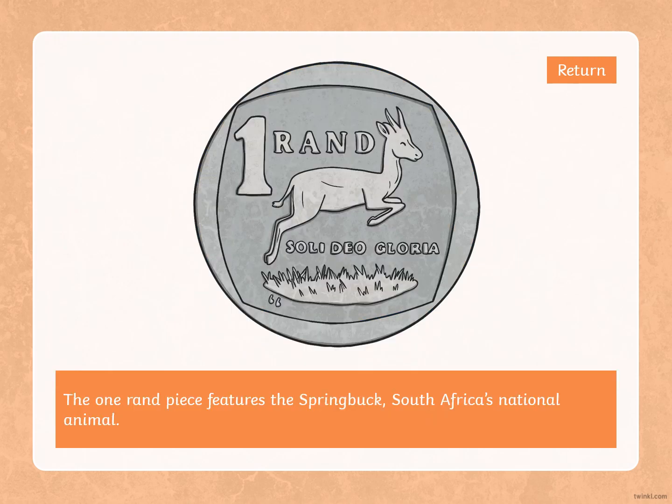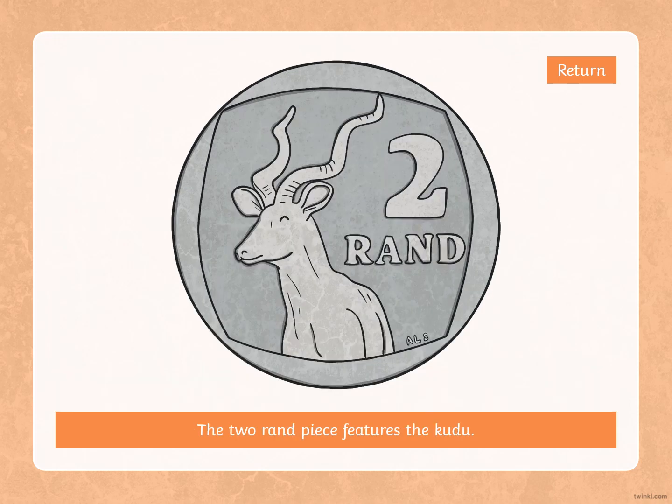The 1 rand coin features the springbok, South Africa's national animal and the name of our rugby team. The 2 rand piece features the kudu.